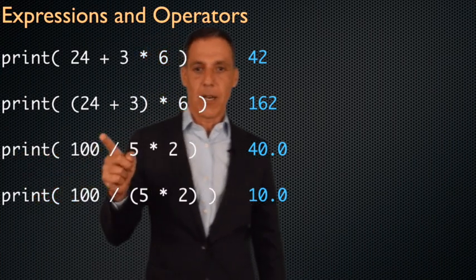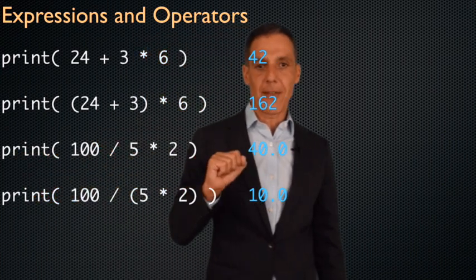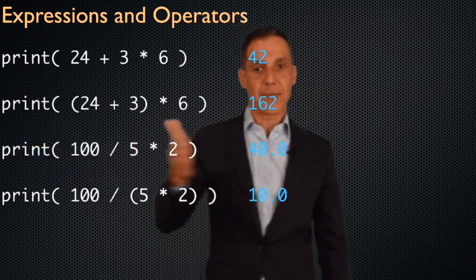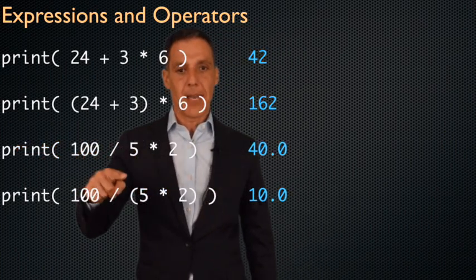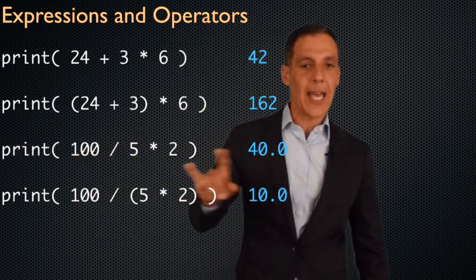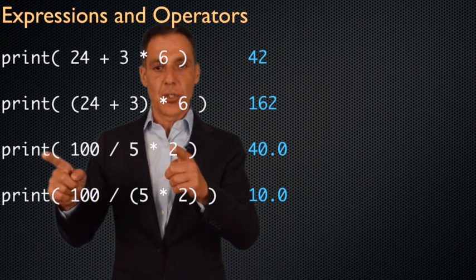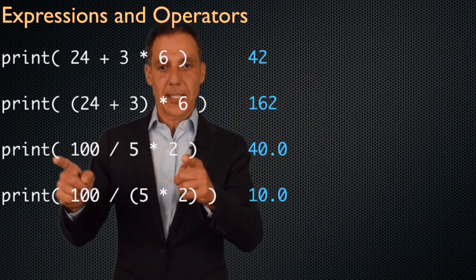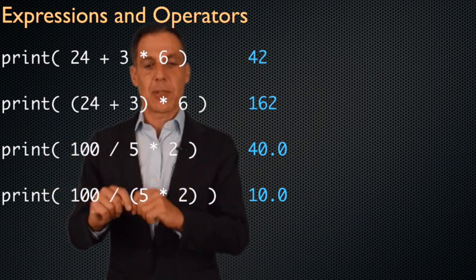Here, for example, in this one, you can see that division and multiplication have equal priority, but we now go from left to right. 100 divided by 5 is 20 times 2 is 40. Again, I don't think that you should ever write expressions like this, because I think you should explicitly put parentheses.